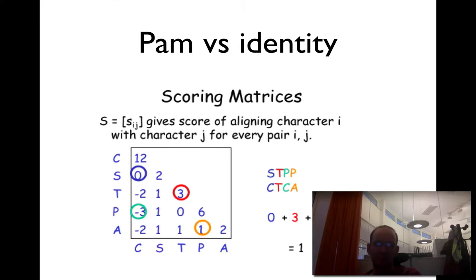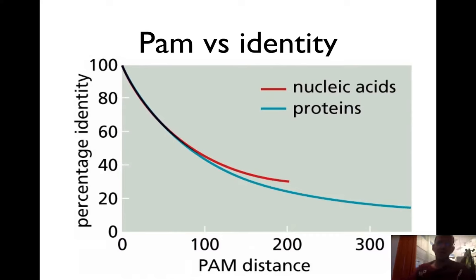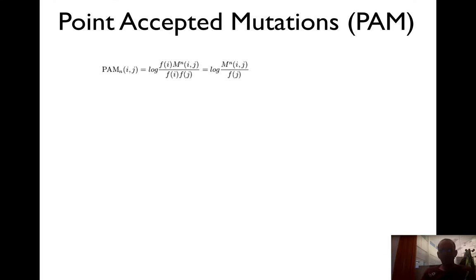And the reason, as I said before, is you have... the relationship between PAM and identity is roughly as shown in this plot. Of course, many amino acids you can mutate several times. The identity doesn't scale linearly with PAM distance. Roughly at 200 PAM, you have 25-30% sequence identity for proteins, and really high number of mutations.